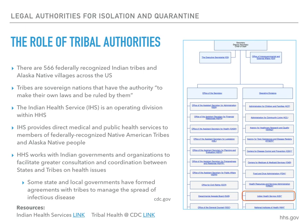Tribal authorities are the ones who enforce isolation and quarantine on tribal lands. There are 566 federally recognized Indian tribes in Alaska Native villages, distributed across 35 of the 50 states. The U.S. recognizes tribes as sovereign nations subject to certain federal laws. As described by the U.S. Supreme Court, tribal sovereignty refers to the authority of tribes to make their own laws and be ruled by them. The federal government has a unique legal and political government-to-government relationship with tribal governments, and a special obligation to provide services for American Indians and Alaska Natives. This is done via the Indian Health Service, an operating division within the U.S. Department of Health and Human Services.